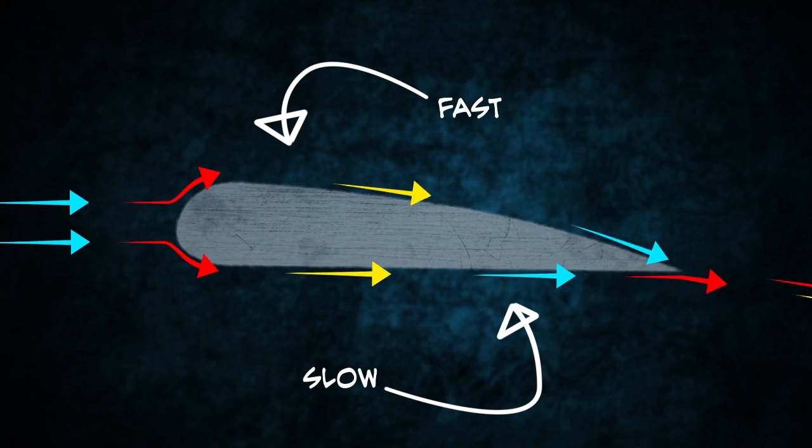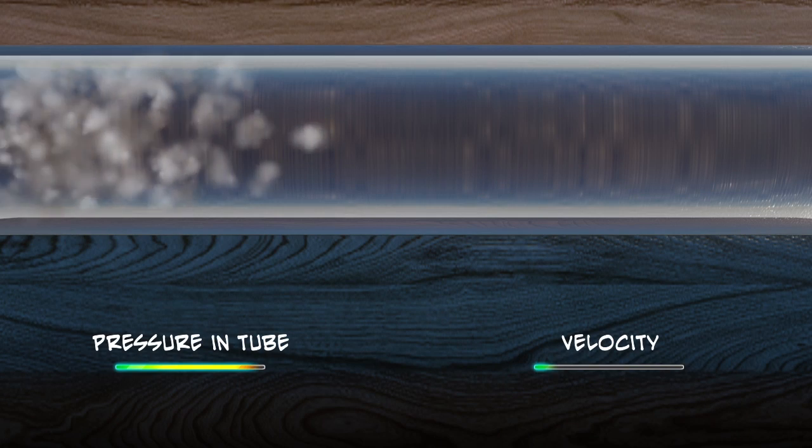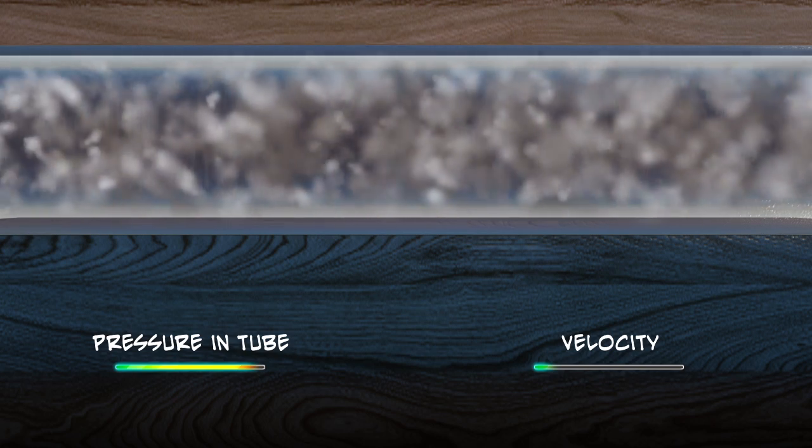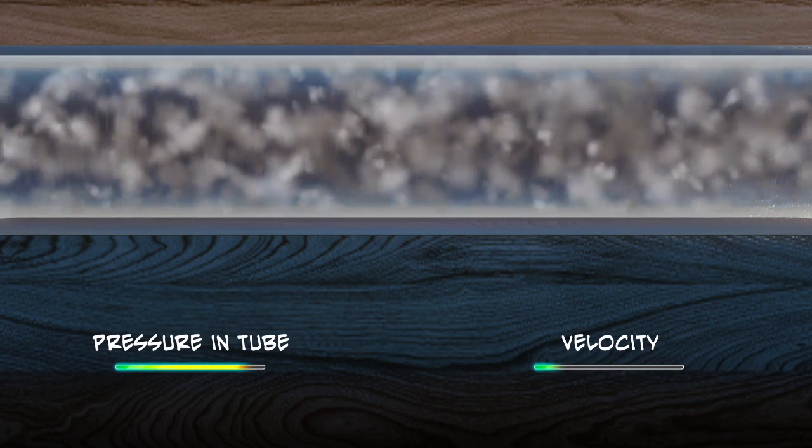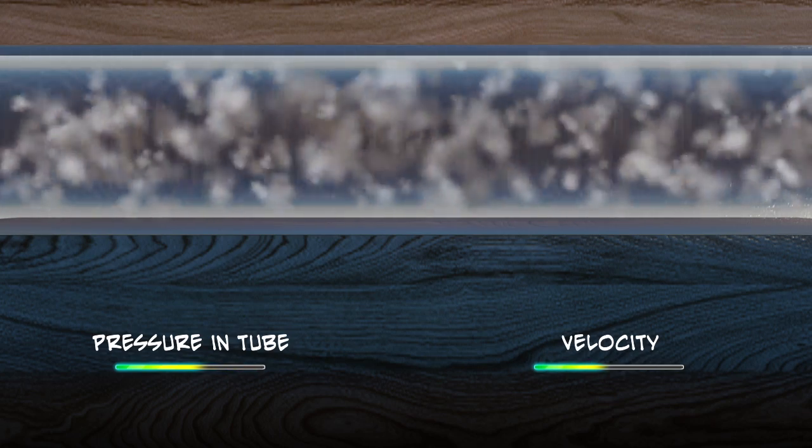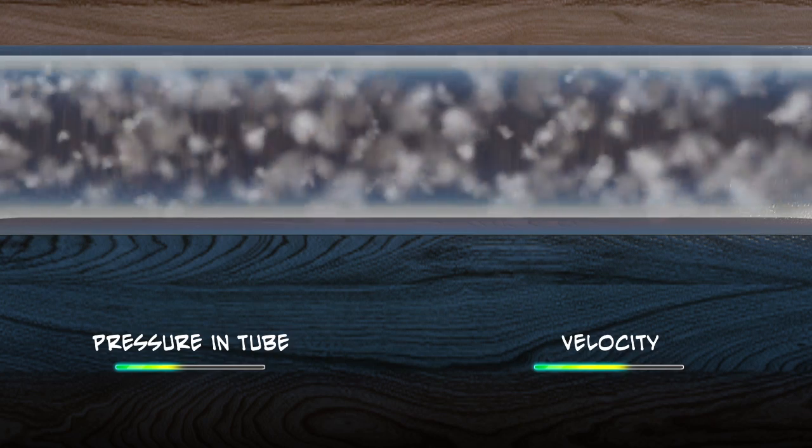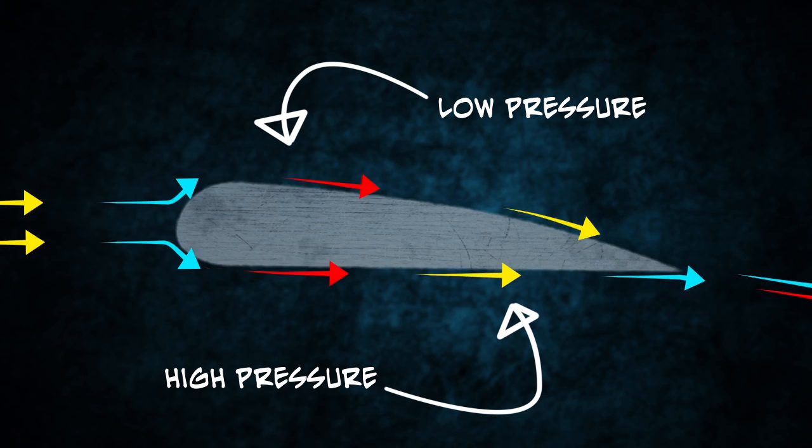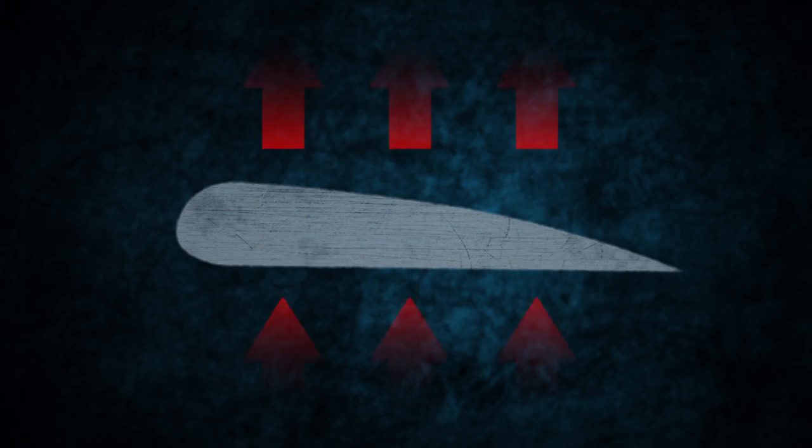First, let's take a look at an important principle that Bernoulli discovered in the 18th century. Daniel Bernoulli found out that fast-moving liquids or air exert less pressure than slow-moving liquids or air. As a result, the pressure on top of the wing is much lower than the pressure below it because the air moves faster on top of the wing. This produces a force that pushes the wing and consequently the airplane upwards.